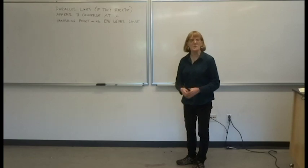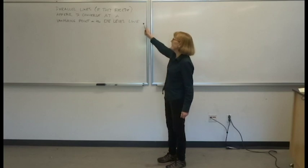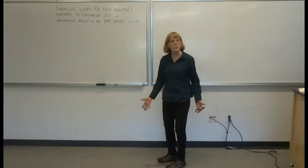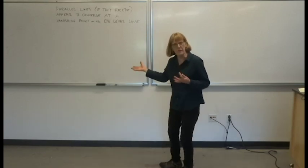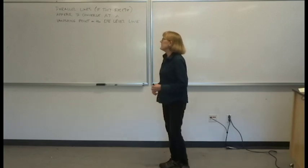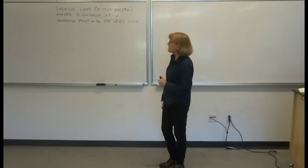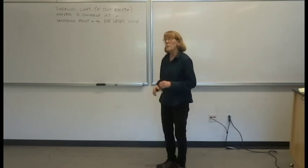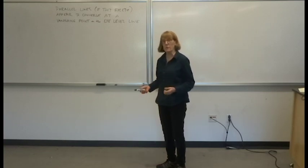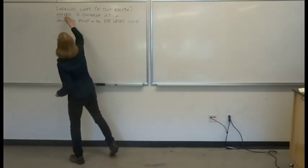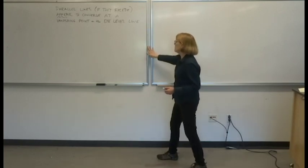We're going to go over the principles of linear perspective, and I'd like to start by giving you a sentence that I think will bail you out of a lot of perspective difficulties if you memorize it. We're going to go through this, define the terms, and that will get us started. Parallel lines, if they recede, appear to converge at a vanishing point on the eye level line. Parallel lines are lines that never converge - that's why I've written that they appear to converge. Parallel lines are lines like these two silver bars.